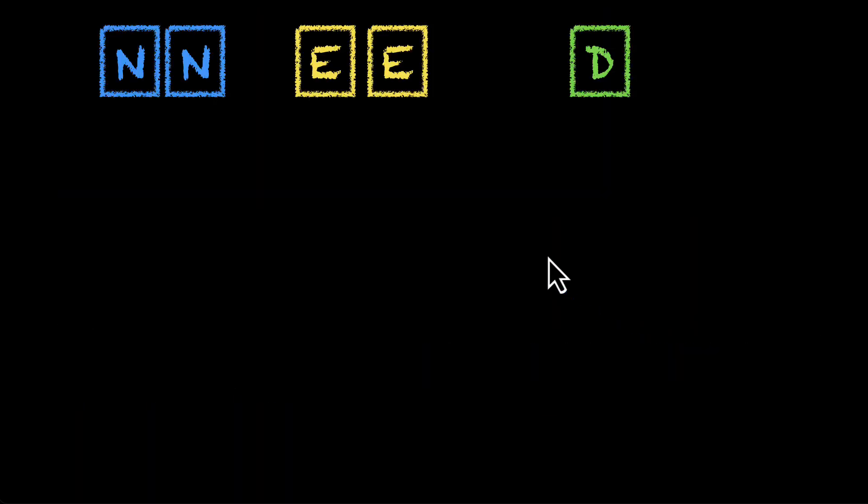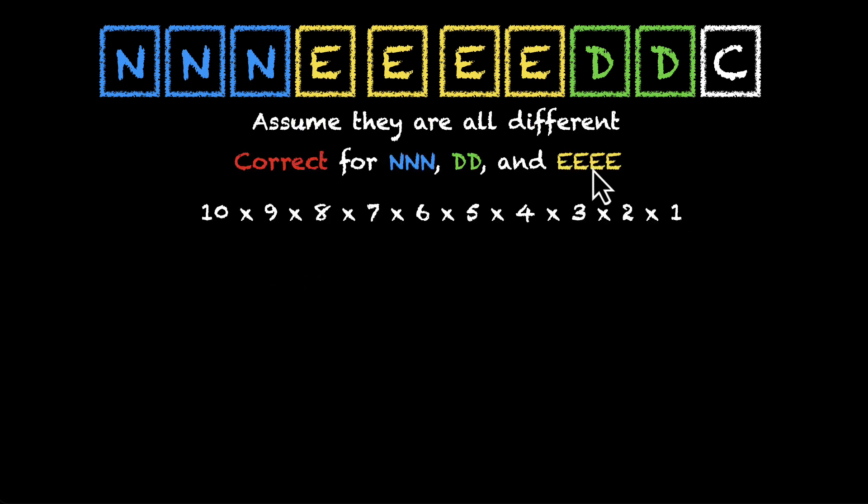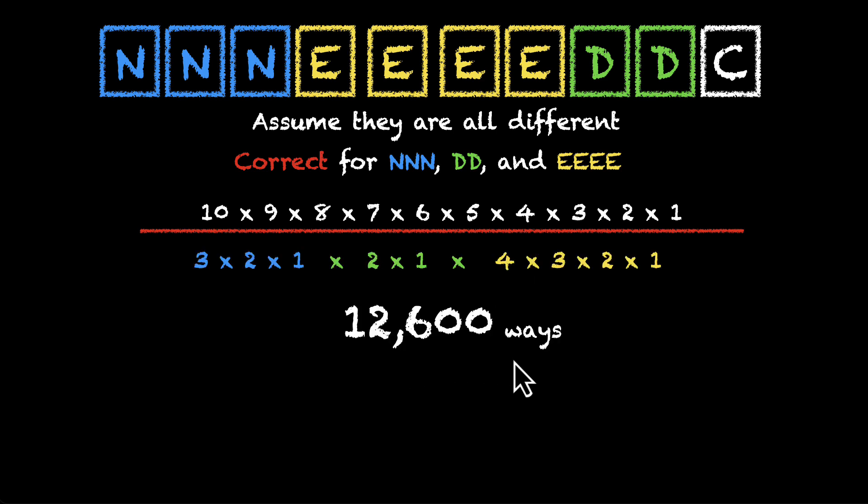Alright. This is what we have. We have 3 plus 4, 7 plus 3, 10. 10 letters and we have some repetitions. Let's assume that they're all different. If they're different, this is what we'll get. But we'll make room for correction and this is what we'll get after the correction. We'll have a total of 12,600 words without worrying about P and I.